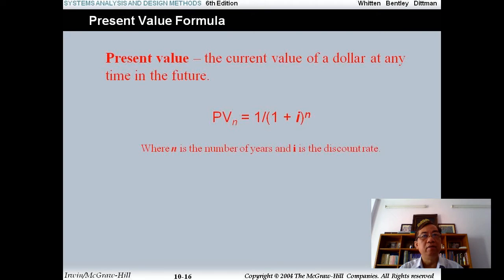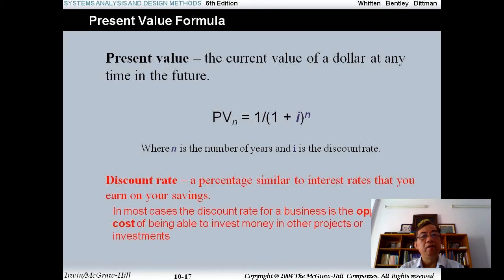The present value formula. This is the formula of the present value. The present value, the current value of a dollar at any time in the future. You see the formula here: PV_n equals one over one plus i to the power n, where n is the number of years and i is the discount rate. Discount rate is a percentage similar to the interest rate that you earn on your savings. In most cases, the discount rate for a business is the opportunity cost of being able to invest money in other projects or investment.